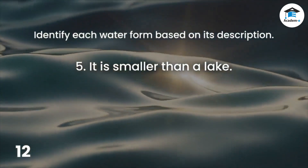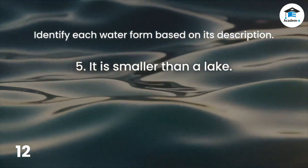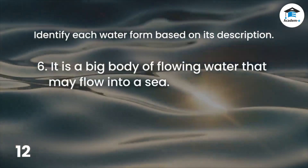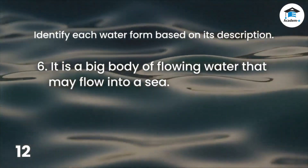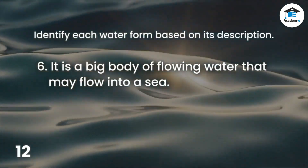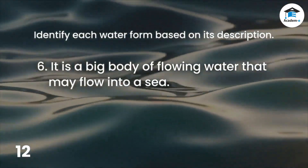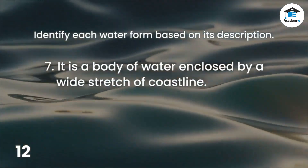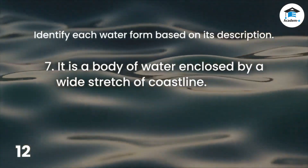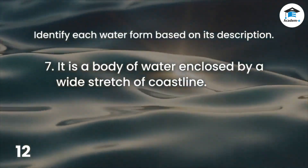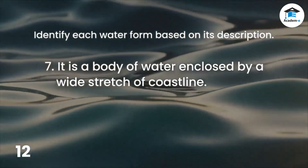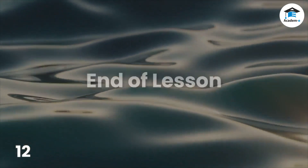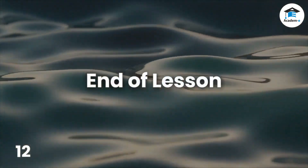Number 5: It is smaller than a lake. The answer is pond. Number 6: It is a big body of flowing water that may flow into a sea. The answer is river. Number 7: It is a body of water enclosed by a wide stretch of coastline. The answer is bay.